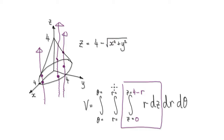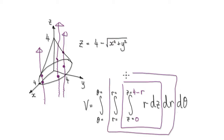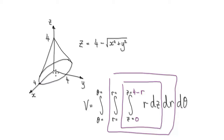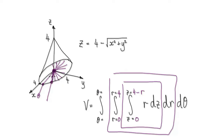Now looking at it in terms of the radius, you're integrating from a radius of 0 to a radius of 4. You enter r equals 0 and you leave at r equals 4. And then in terms of the angle, you're integrating from an angle of 0 all the way to an angle of 2 pi.